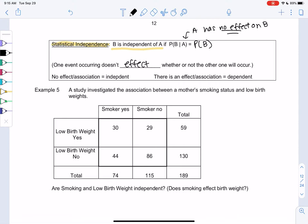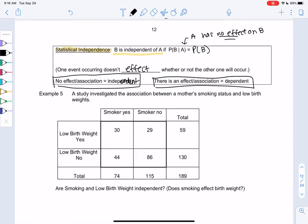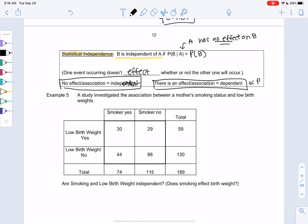And then, no effect or no association is independent. Otherwise, if they have some sort of effect or association, we call them dependent. And that means those probabilities are not equal to each other. By the probability changing, there's some sort of effect.